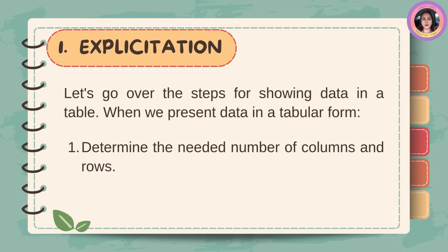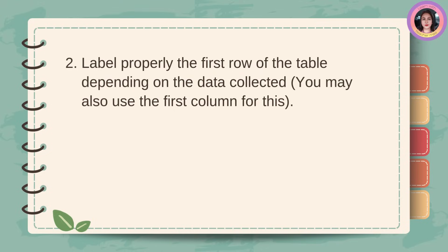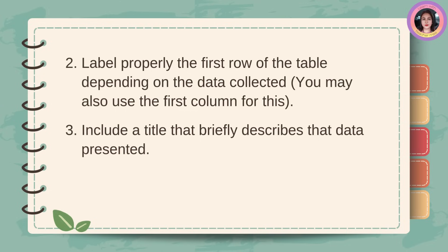Let's go over the steps of showing data in a table. When we present data in tabular form, first determine the needed number of columns and rows. Next, label properly the first row of the table depending on the data collected — you may also use the first column for this. Third, include a title that briefly describes the data presented.